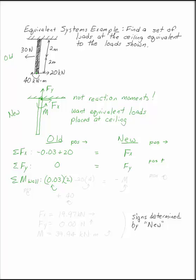I have 20 kilonewtons acting at 4 meters, tending to spin the wall counterclockwise. And I have 40 kilonewton meters, which tends to spin the wall clockwise. Those are my three loads at the wall.